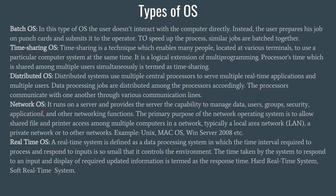In Network OS, this kind of OS runs on a server and provides the capability to manage data, users, groups, security, applications, and other networking functions. The primary purpose is to allow shared file and printer access among multiple computers in a network, typically a LAN (Local Area Network). If a file exists on one computer, it can be transferred directly to all other connected computers. Several computers are connected together and work together through a LAN. Examples include UNIX, Mac OS, and Windows Server 2008.